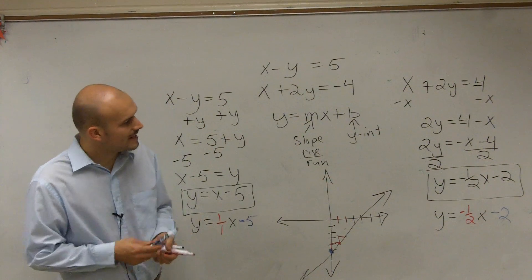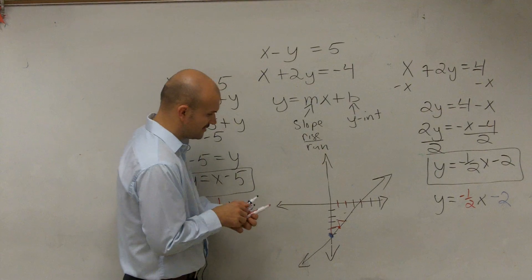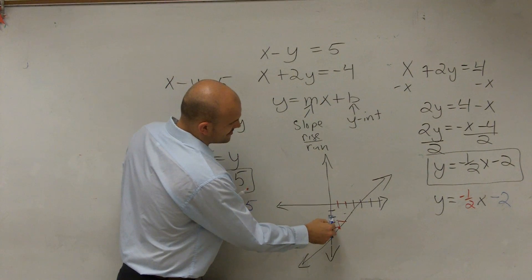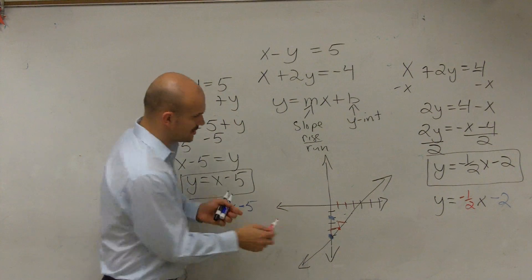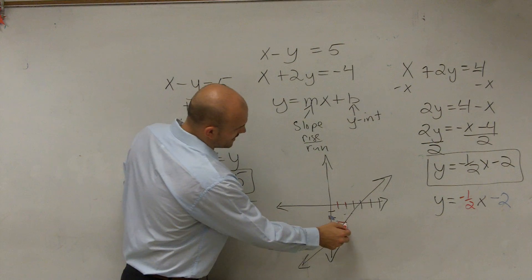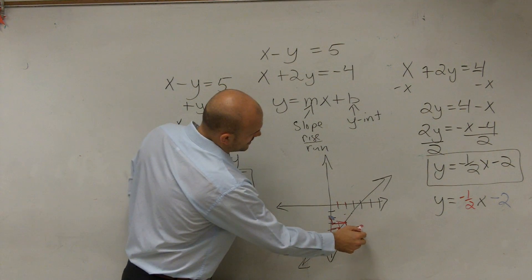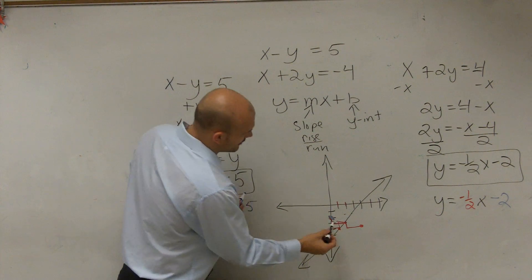Then you can follow negative 1 half, negative 2. So now I go down to negative 2 and make a nice big blue dot. Now this slope tells me to go down 1 to the right 2. Down 1 to the right 2. So when I connect that graph...